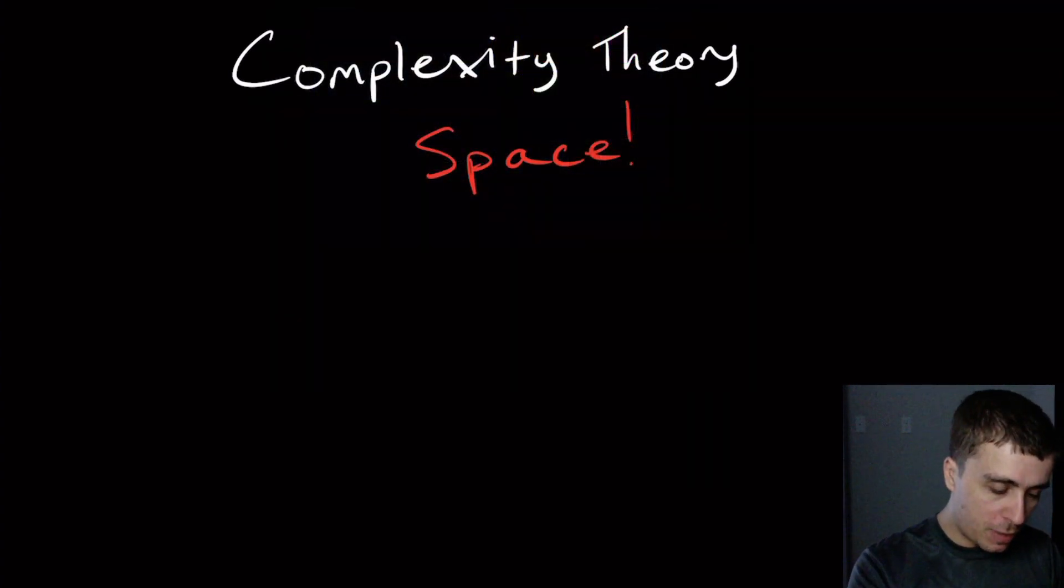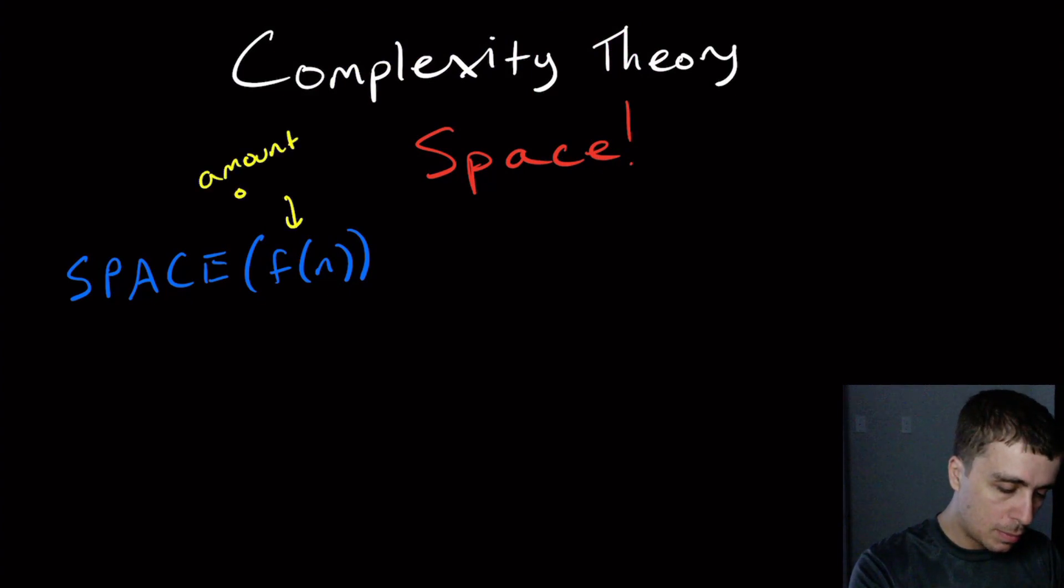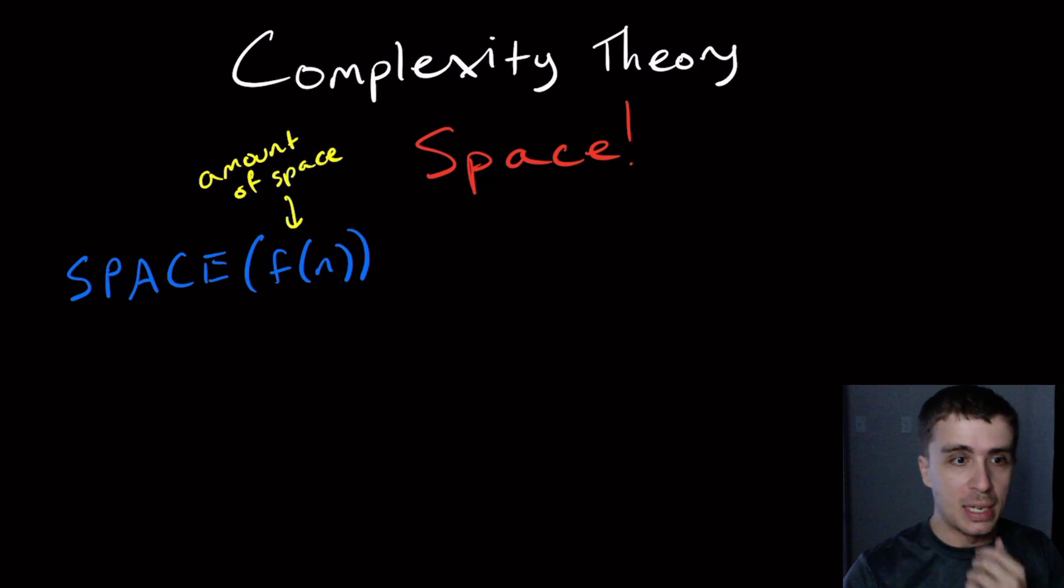So what I'm going to define to be some function called space of f of n. So the f of n is going to be the amount of space used and I'll define that more precisely in a bit. So what this means is that I want to talk about Turing machines that run in basically f of n or less amount of space.